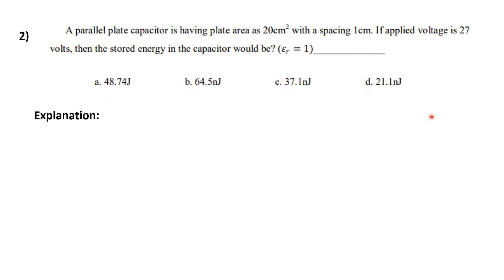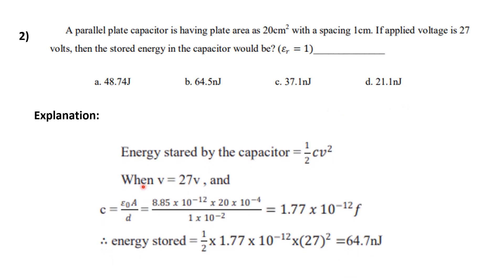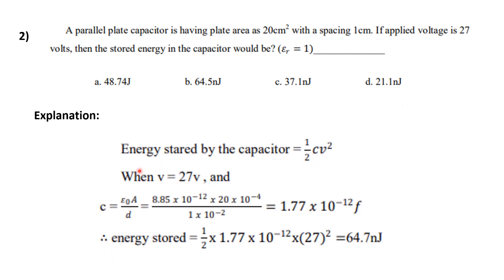So in the four options, what will be the correct answer? Energy stored by the capacitor is 1/2 C V squared. When V equals 27 volts, voltage is 27 volts.